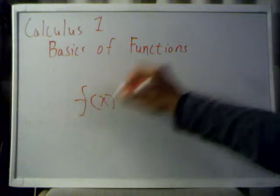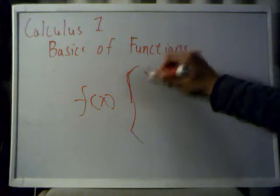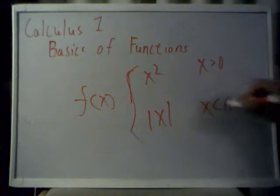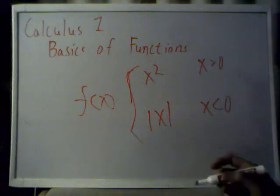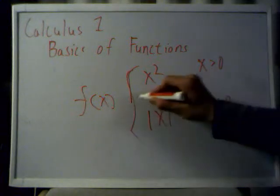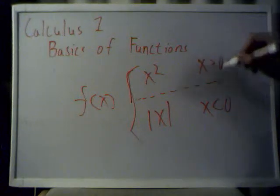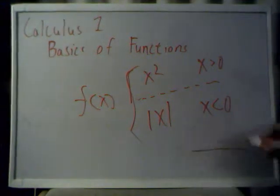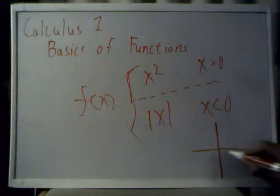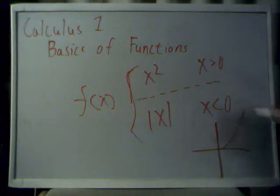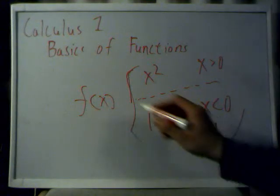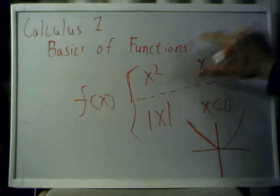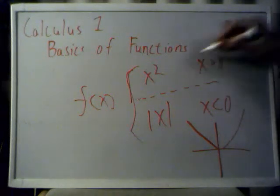A piecewise function is defined as f of x — let's say x squared if x is greater than 0, and absolute value of x if x is less than 0. This is a lot simpler than it actually looks, because you just treat this as two separate functions. If x is greater than 0, you say f of x is equal to x squared. If x is less than 0, f of x is the absolute value of x. So on the right side where x is greater than 0, you have f of x equal to x squared, and on the left side where x is less than 0, f of x is equal to absolute value of x. It's just taking the functions one part at a time, graphing them separately, sticking to the ranges, and then you'll be fine.